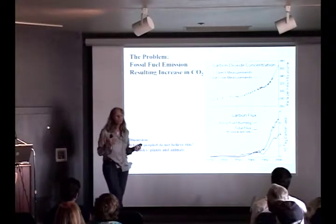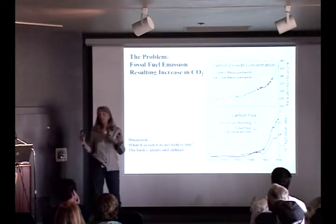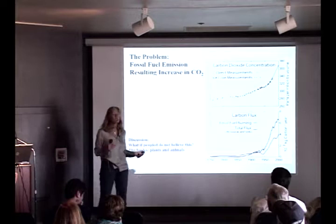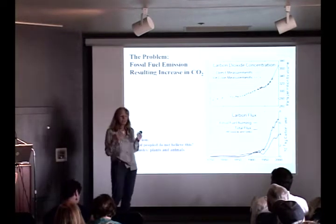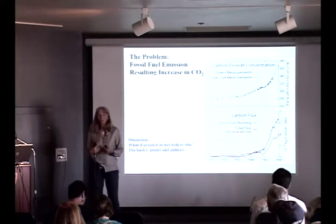Animals, including humans, cannot do this, so they need to eat. We eat organic carbon — carbohydrates, fats, sugars, proteins — and we use these to make our own carbon, to build our own body, and to get energy. That's more or less in balance. Now, millions of years ago, a little bit of the plant carbon was stored away — tiny amounts over millions and millions of years. That's basically our fossil fuels.